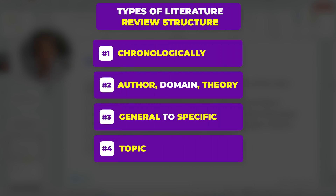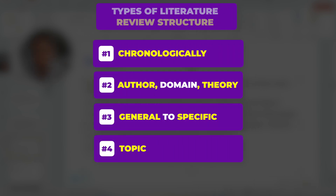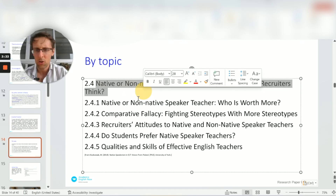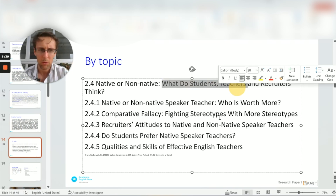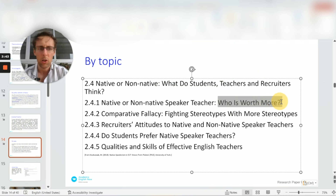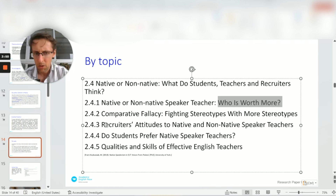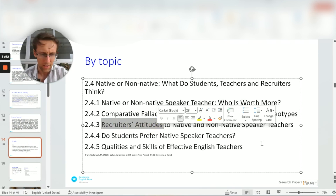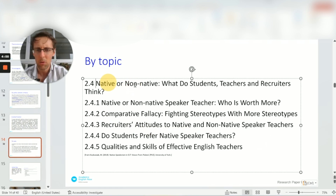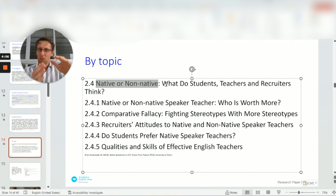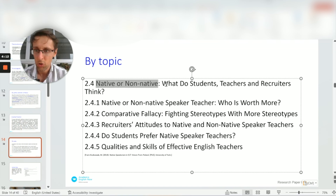Finally, you can organize by topic. For example, the discussion centers on native and non-native speakers throughout, but across different topics: first, students', teachers', and recruiters' perceptions; then who is a better teacher; then recruiters' attitudes and hiring policies; and students' preferences. They're all about the same general subject — native and non-native speaker teachers — but organized into distinct subtopics. That's how you can organize an entire section of your literature review by topic.